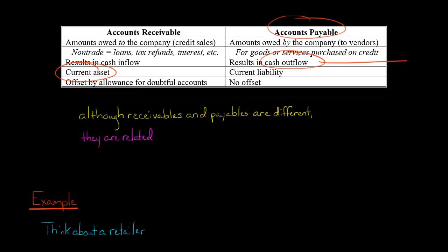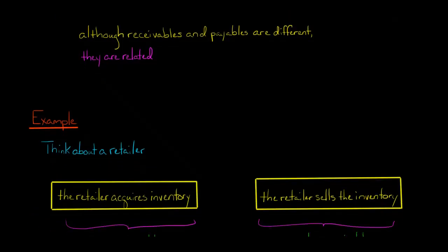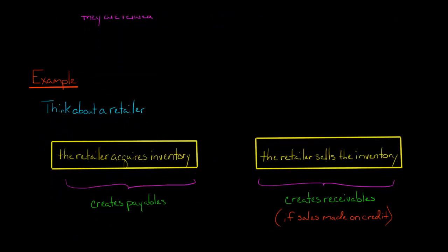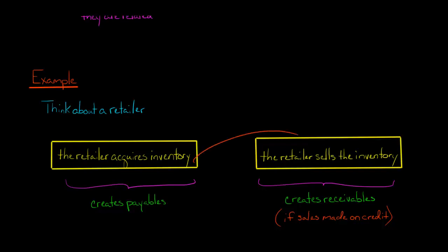Let's say that we had a retailer. The retailer acquires inventory — they buy the inventory, and when they buy it on credit, which generates payables. So they acquire inventory and get an account payable in the process, but then they sell the inventory, and let's say that they sell the inventory on credit.